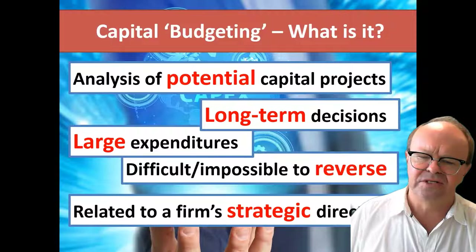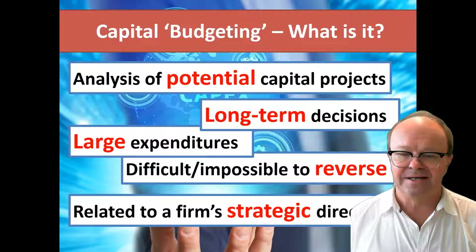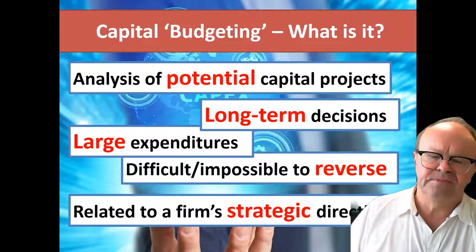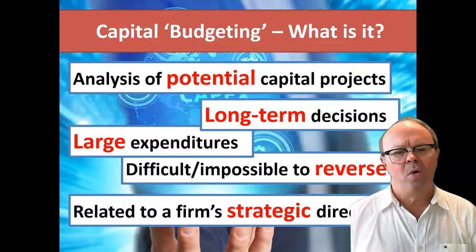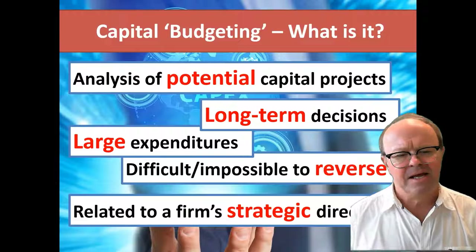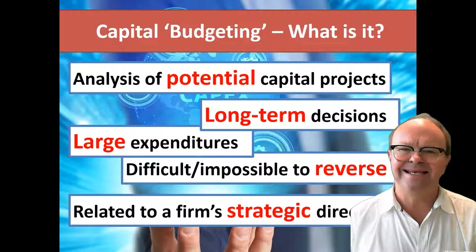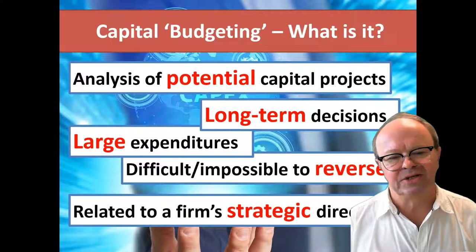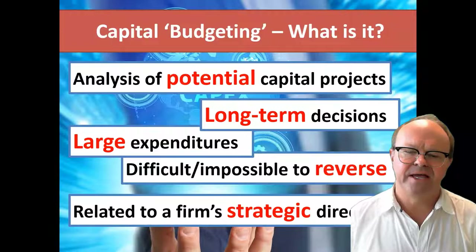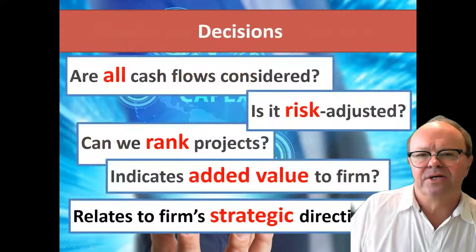Buying a house is expensive to undo — there are lots of transaction costs and hassle, same with a car. So these are decisions where you have a degree of commitment. They're related to a firm's strategic direction. Ryman Healthcare's strategy is to develop, own, and manage retirement village units in New Zealand and in Victoria around Melbourne. Its capital investment decisions are related to that strategic direction.